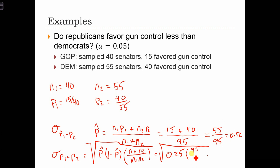Which gives us, and I'll just do it all at once, 0.25 times 95 divided by 2200, the square root of 0.011, which is 0.10.